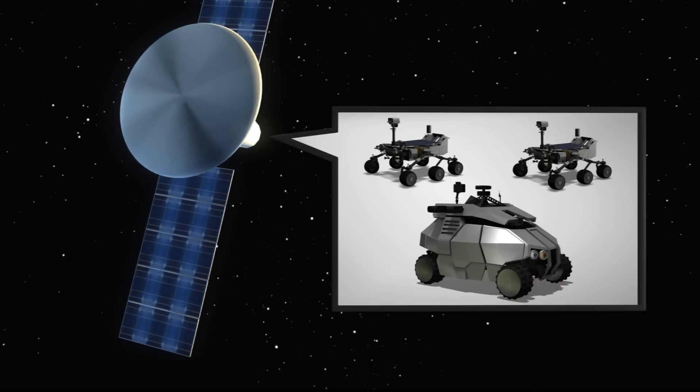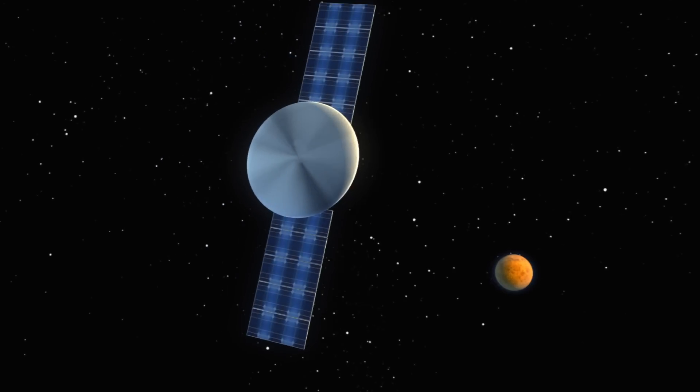The ERV carries two scientific rovers and a tele-robotically driven truck. It lands on Mars eight months later.